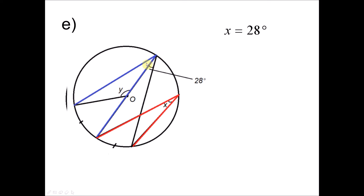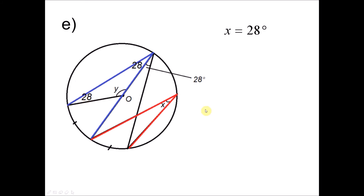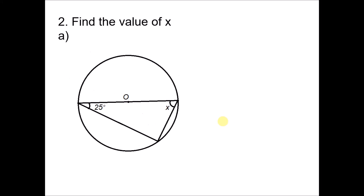Since the two lines shown are radii, this forms an isosceles triangle. With both base angles equal to 28°, we calculate Y equals 180° minus 28° minus 28°, giving Y equals 124 degrees.